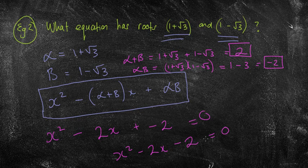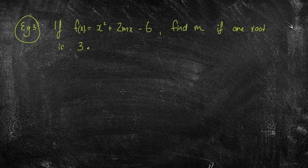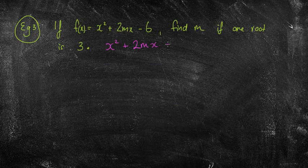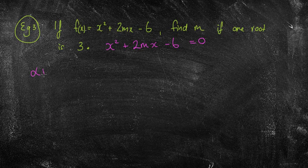That's a bit of a backwards question — we're working back to get our original equation. The next one: if f(x) equals x squared plus 2mx minus 6 equals 0, find m if one root is 3. When it's talking about a root, we're talking about alpha plus beta equalling negative b over a, and alpha beta equalling c over a.